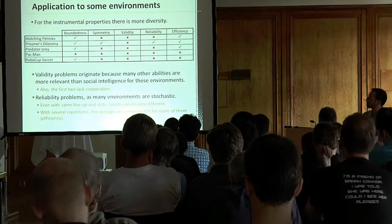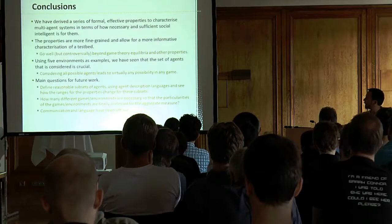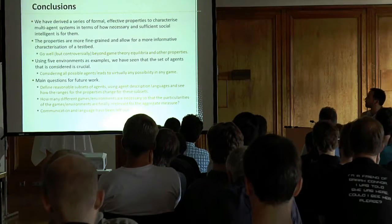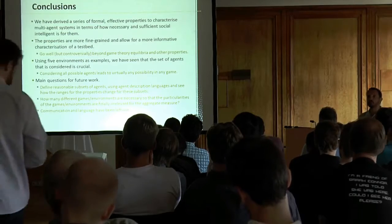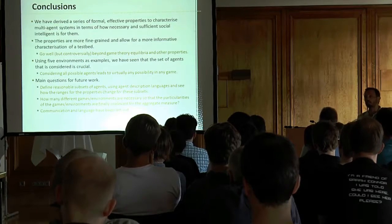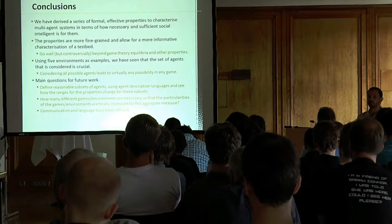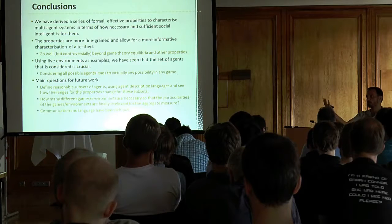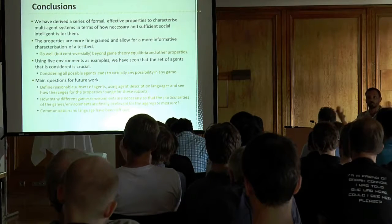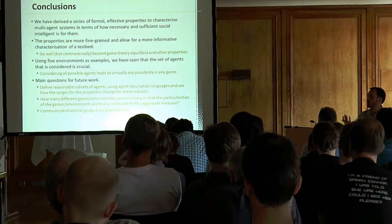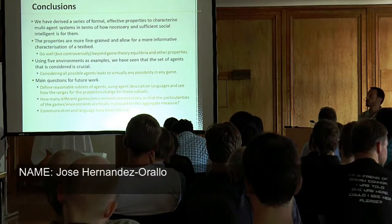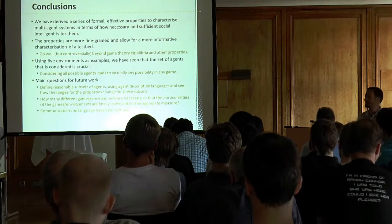This is the first approach to evaluating social intelligence test beds. It took time just to survey all the different notions of social abilities from multi-agent systems, human intelligence, and animal intelligence — and these are not compatible with each other. We tried to derive some properties. This won't be definitive, but I think it's a first step, and we — especially the student — have learned a great deal over these three or four years.